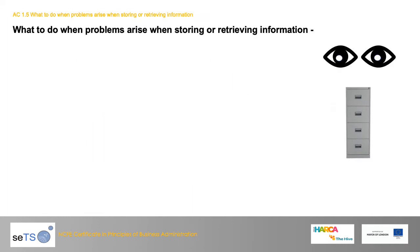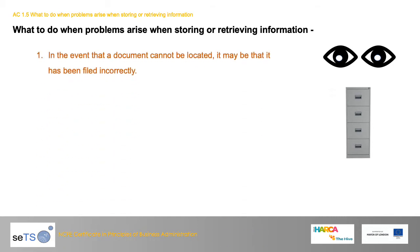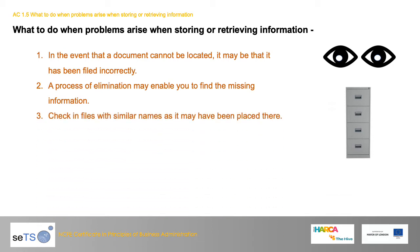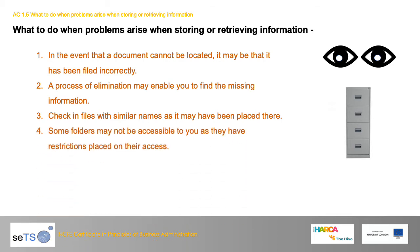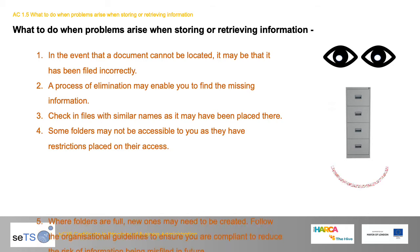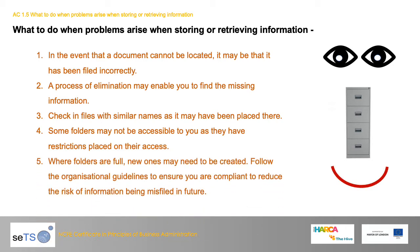What to do when problems arise when storing or retrieving information. Number one: if a document cannot be located, it may have been filed incorrectly. Number two: a process of elimination may help you find the missing information. Number three: check files with similar names, as the document may have been placed there. Number four: some folders may not be accessible to you as they have restrictions on access. Number five: where folders are full, new ones may need to be created — follow organisational guidelines to ensure compliance and reduce the risk of misfiling in future.